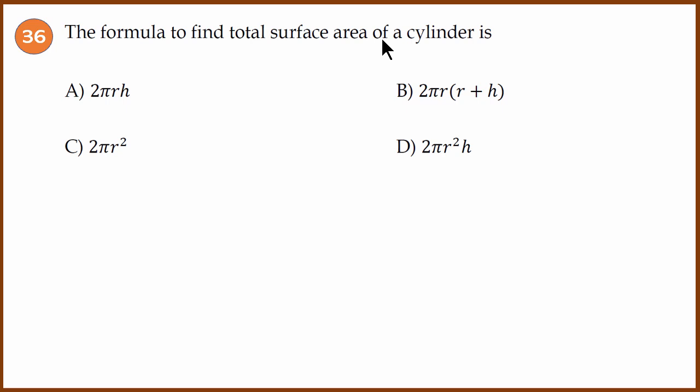Question 36 is a formula question about surface area and volume. The total surface area of a cylinder: the answer is B. Note that the curved surface area only would have been option A, which is 2πrh.